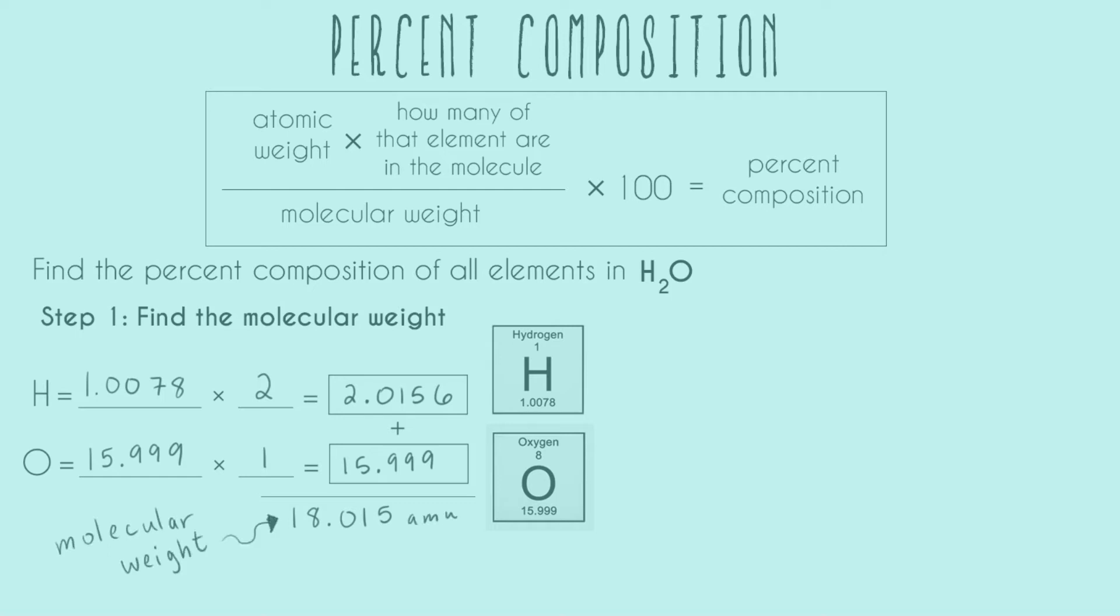Alright, so what I did was I took the atomic weights from both of these periodic table squares and plugged them in. Then I followed the subscripts to get how many of each element I had. For water, I had a subscript of 2 for H, so I put in 2. And for oxygen there was no subscript, which means there's an implied 1, so I put a 1 in.